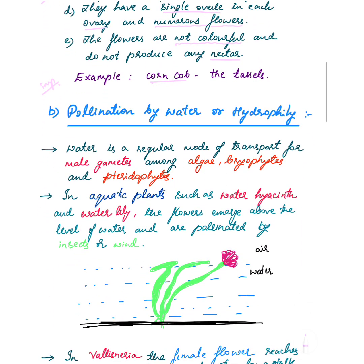The next important type of pollination is pollination by water, also called hydrophily. 'Hydro' means water and 'phily' means the type of pollination taking place through the medium of water. Water is a regular mode of transport for male gametes among certain lower groups of plants like algae, bryophytes, and pteridophytes.